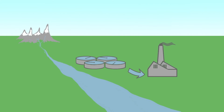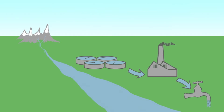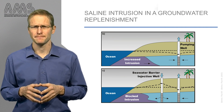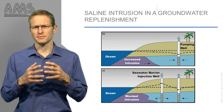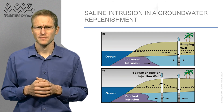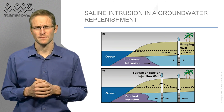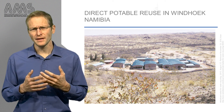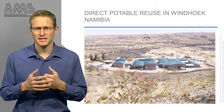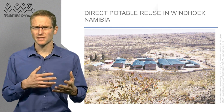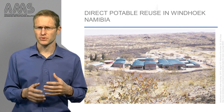Finally, direct potable reuse is a process where wastewater is treated and directly supplied as drinking water to the customer. Planned indirect potable water reuse is widely practiced, such as in Singapore and Orange County, USA. In Orange County, water is injected into the groundwater and then abstracted for drinking, which also replenishes the groundwater and counteracts saline intrusion. Direct potable reuse is rarely practiced — here is an example from Windhoek, Namibia. The reason it is rarely practiced is not so much technical or health-related, but largely due to public perception about wastewater.